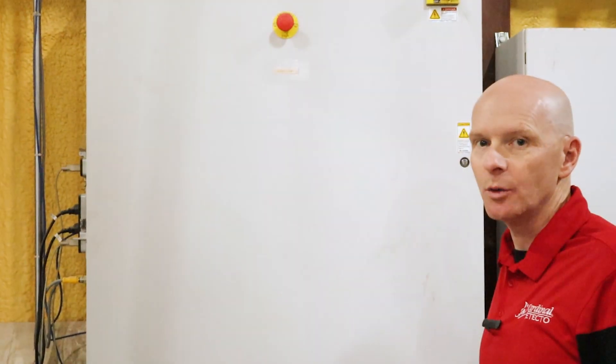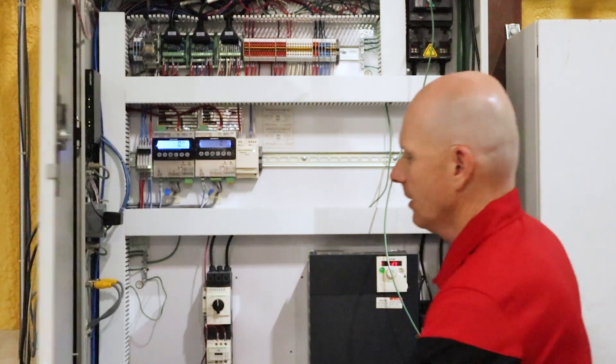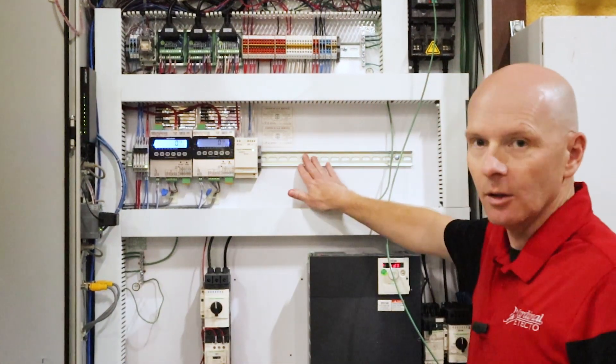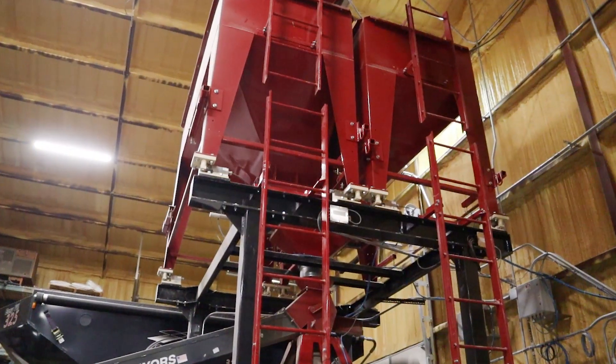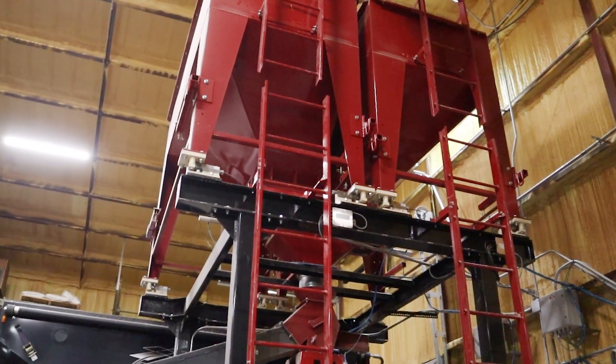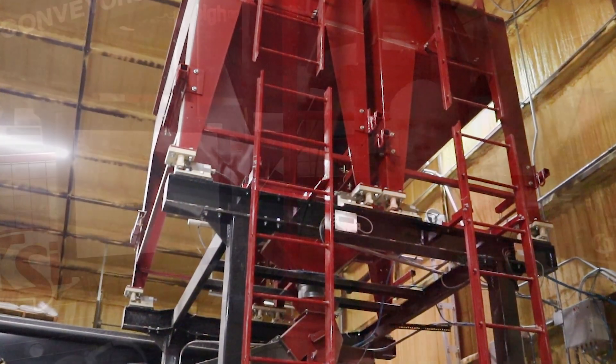The two continuous flow hoppers that we just talked about are controlled by the 201 indicators that are den rail mounted in this UL listed cabinet. While one hopper is filling, the other one is dispensing into the seed treater application.